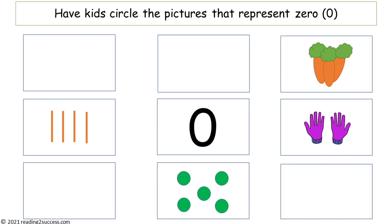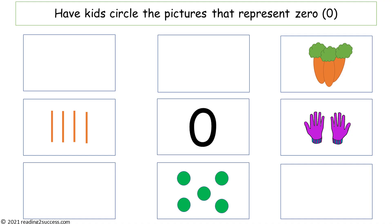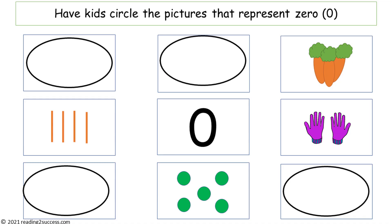We are going to have kids circle the pictures that represent 0. Go to the center of the page and explain this is a 0. This is the picture that represents 0. Zero means nothing. Now review all of the pictures on the practice page with kids — all the 0s as well as the three carats, the four tally marks, the two mittens, and the five dots. Then have them circle all of the pictures that represent 0. This is the completed example.